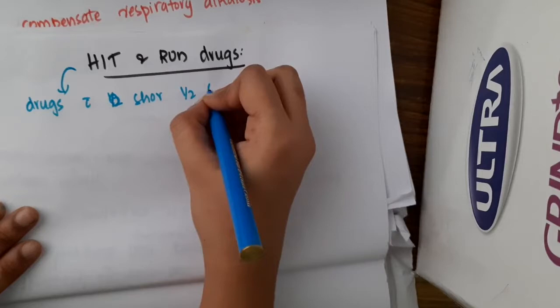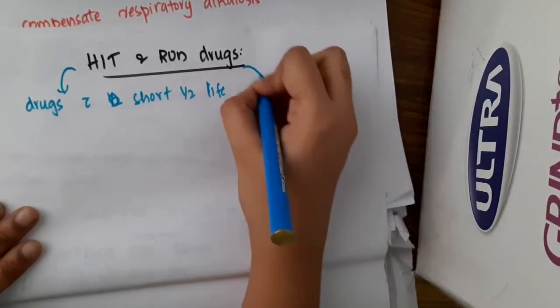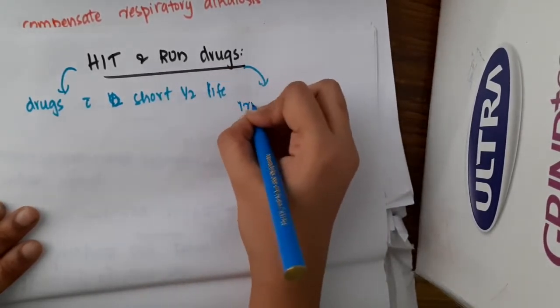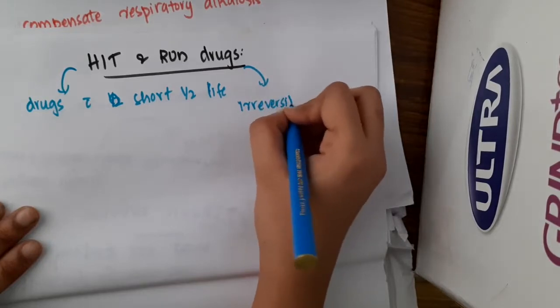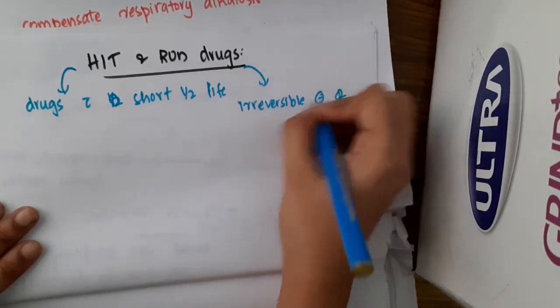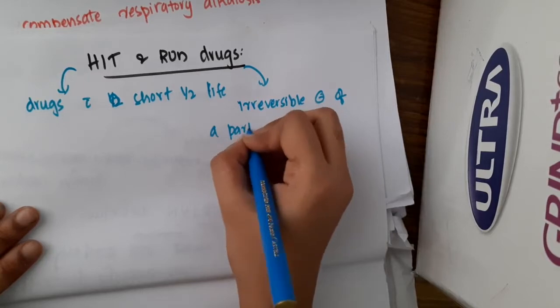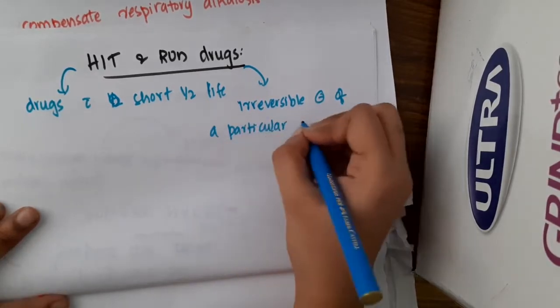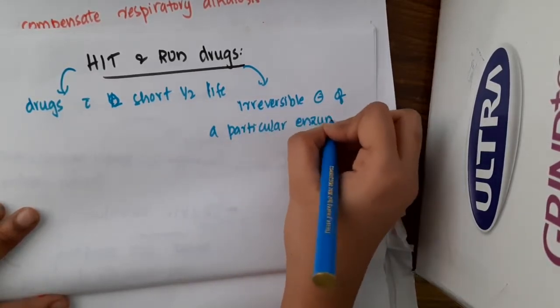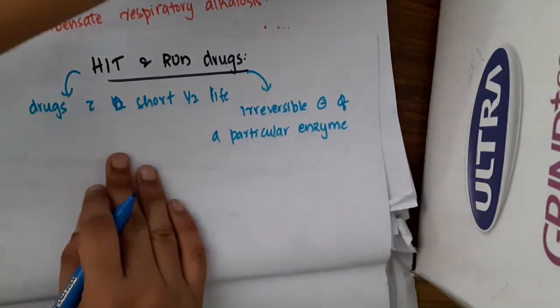Why does it have short half-life? Because these drugs will cause irreversible inhibition of a particular enzyme. Because of irreversible inhibition of this enzyme, they have the short half-life.